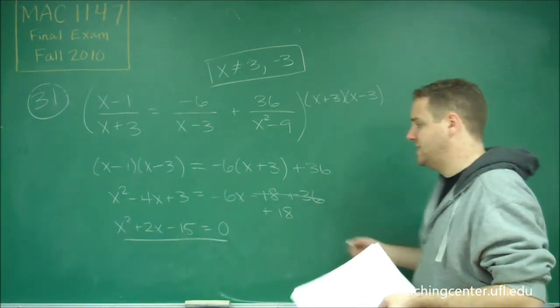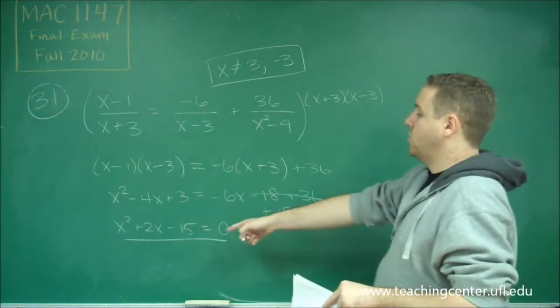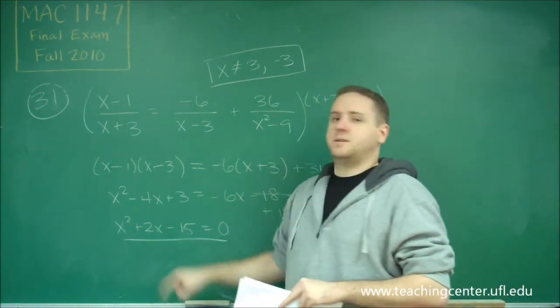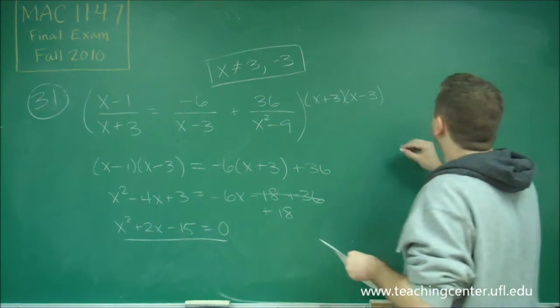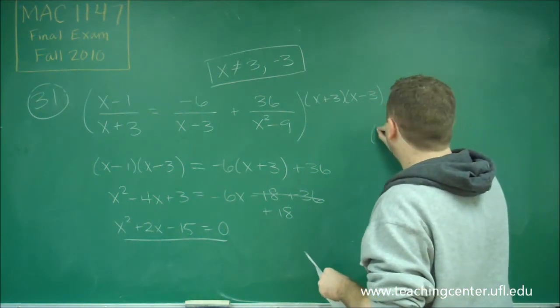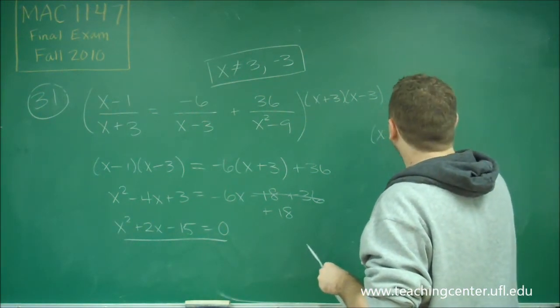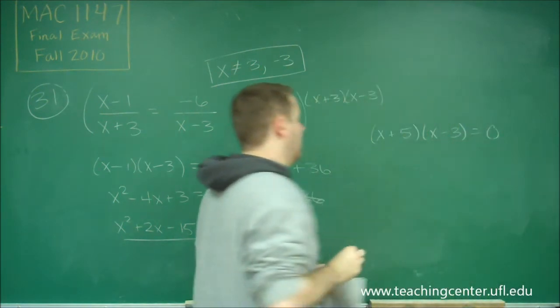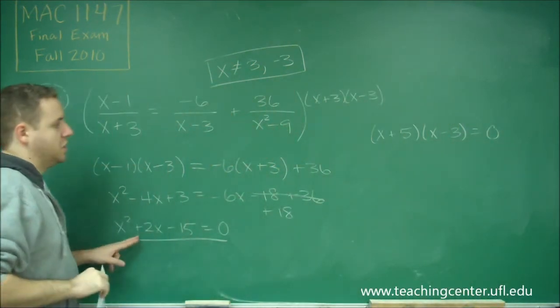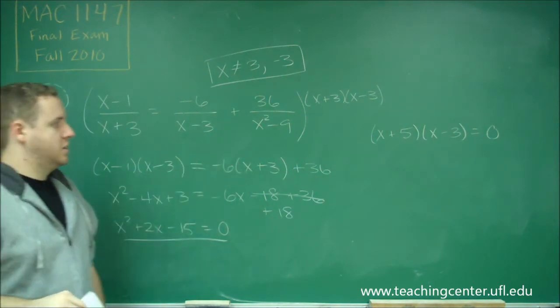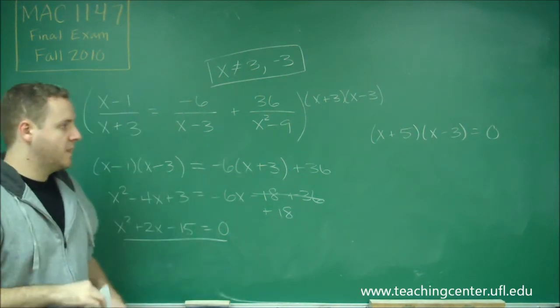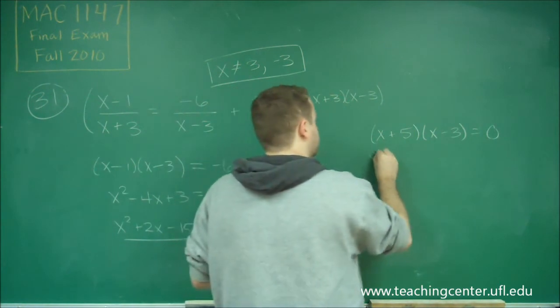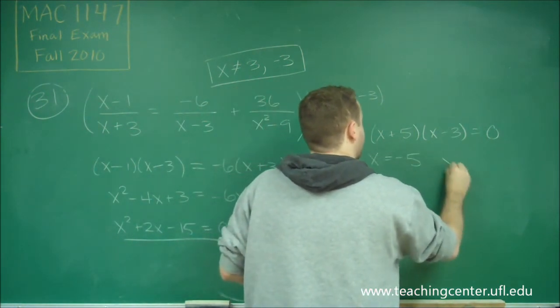And that one is easily factorable. So we need factors of 15 that differ by 2. That would be 5 and 3. So what we have here is x plus 5, x minus 3. So that gives us a middle term of 2 and a last term of negative 15. So this then means that x equals negative 5 or x equals 3.